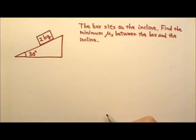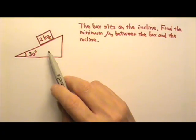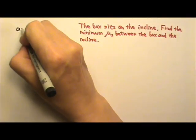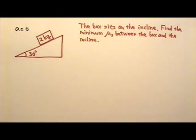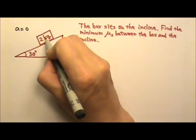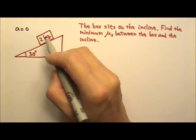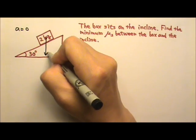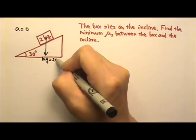So let's follow the problem-solving procedures. The box sits on the incline, which means the acceleration is 0. Let's draw the force diagram. There is the non-contact force Mg, so it's 20 N.